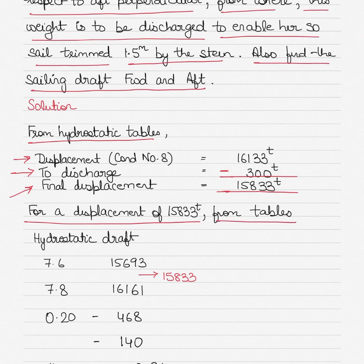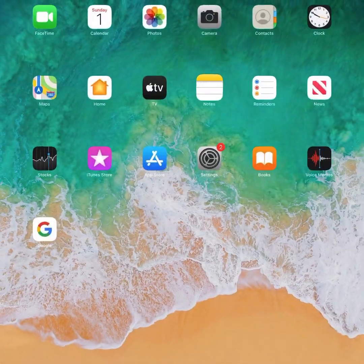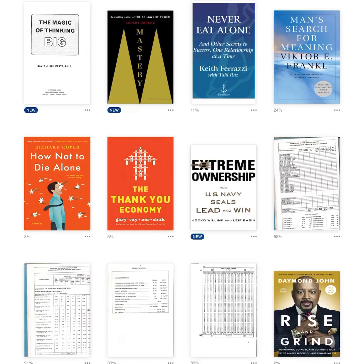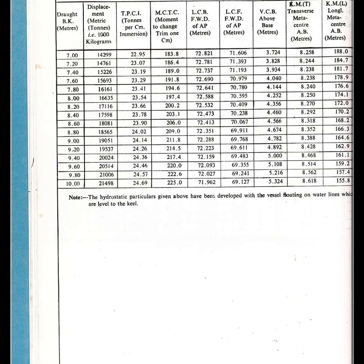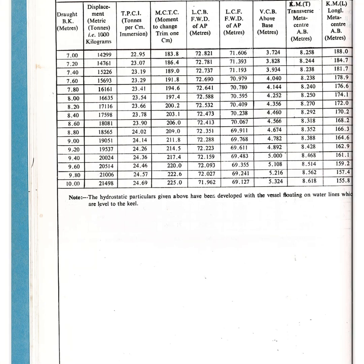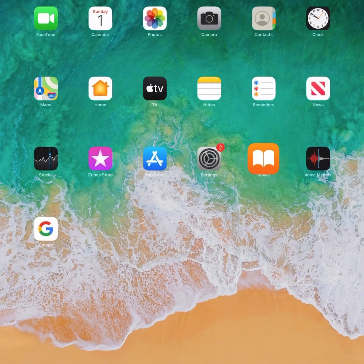For a displacement of 15833 tons, you have to go back into the hydrostatic tables to obtain the hydrostatic draft. The hydrostatic particulars are provided for salt water at specific gravity 1.025. Our displacement of 15833 lies between 15693 and 16161, which means it lies between hydrostatic drafts of 7.6 and 7.8 meters.